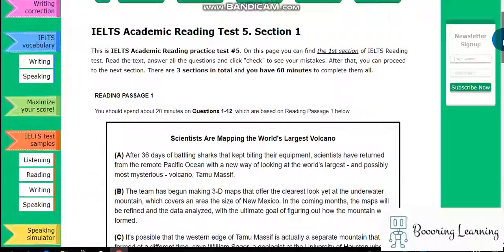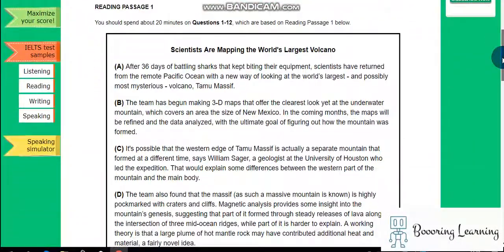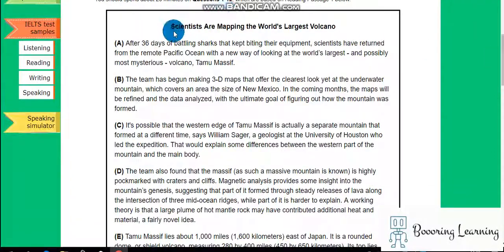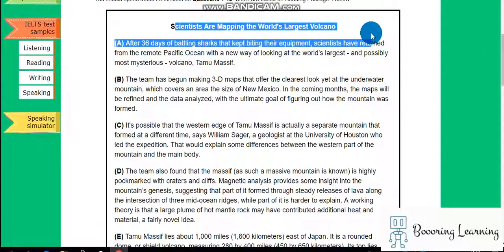Hi, hello, it is IELTS Academic Reading Test 5 Section 1. The topic: Scientists Are Mapping the World's Largest Volcano.